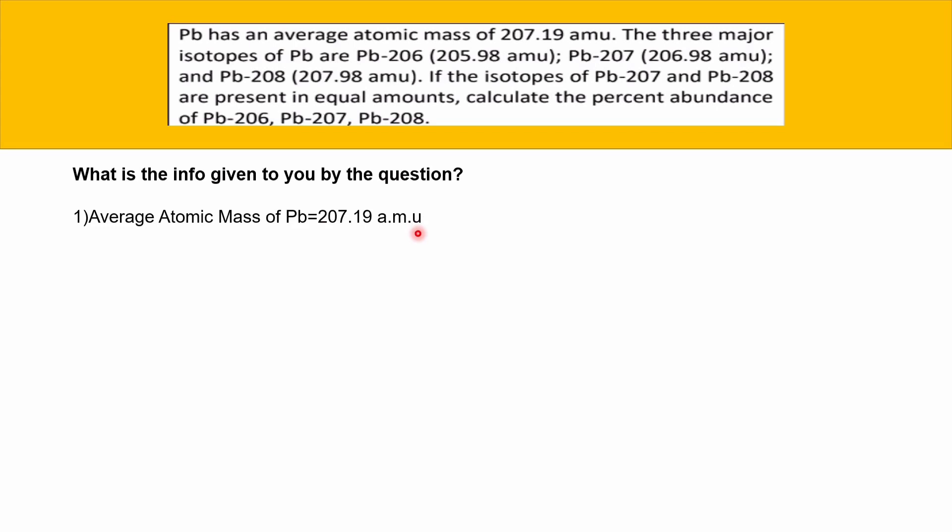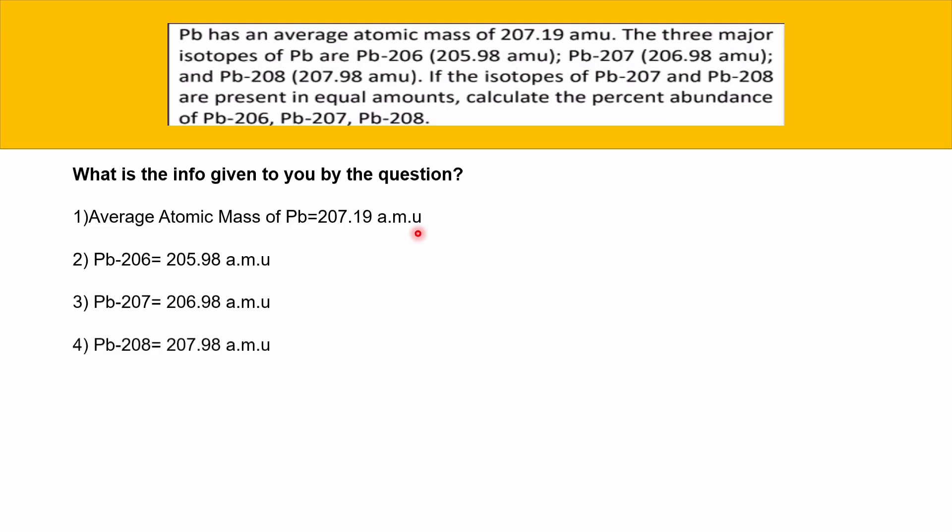Throughout the question, we've been given isotopic masses: Plumbum-206 has an isotopic mass of 205.98 amu, Plumbum-207 has an isotopic mass of 206.98 amu, and Plumbum-208 has an isotopic mass of 207.98 amu.